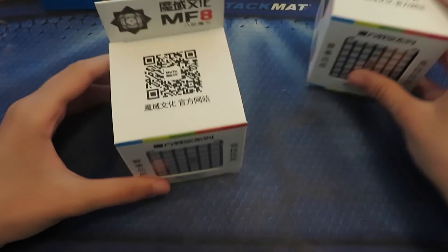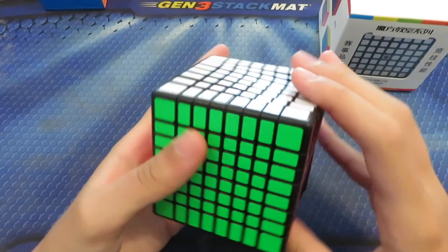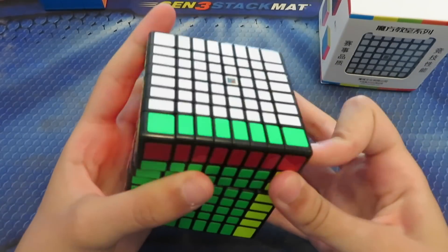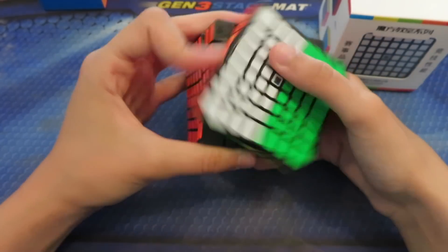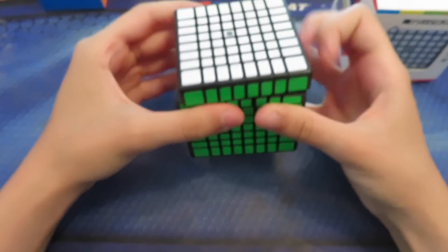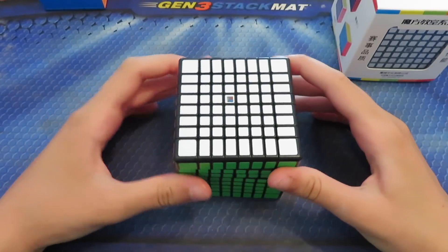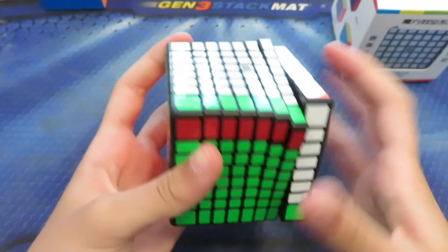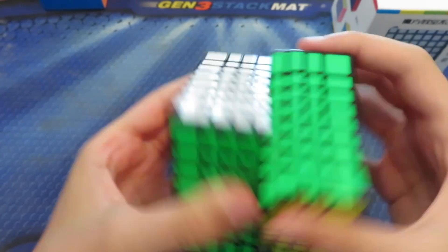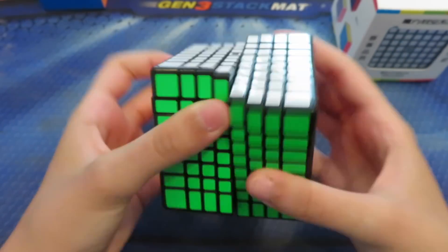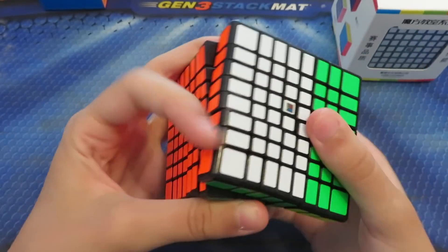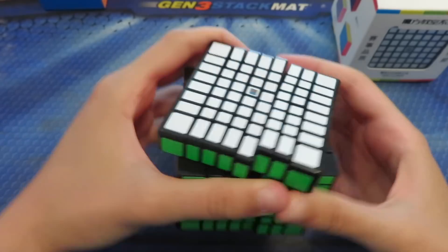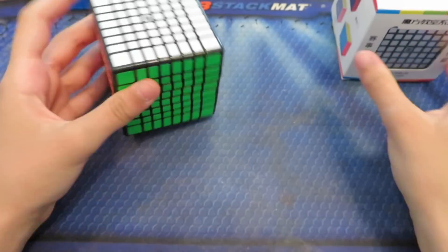Next, I guess we'll open these, we'll start with the MF8. Okay, wow. It's really, really tight. The only other 8x8 I have is Shang Shao, so this is definitely better than that, but it's still really tight and it definitely feels like it needs a lot of breaking in. Oh, lock up. Yeah, still a really cool cube.